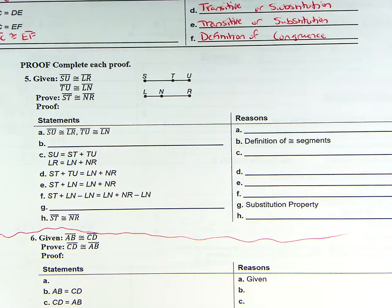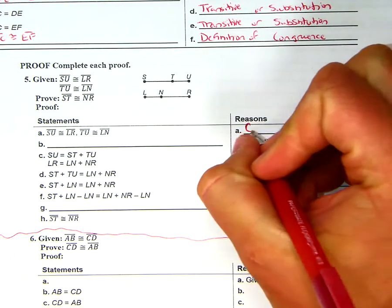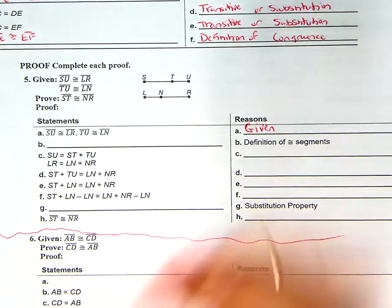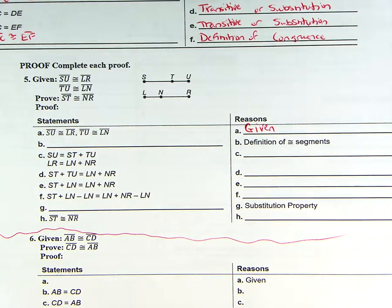So this A, the first statement says segment SU is congruent to segment LR and segment TU is congruent to segment LN. This is just our given. That's our reasoning—it's the given. It tells us up here that happens.